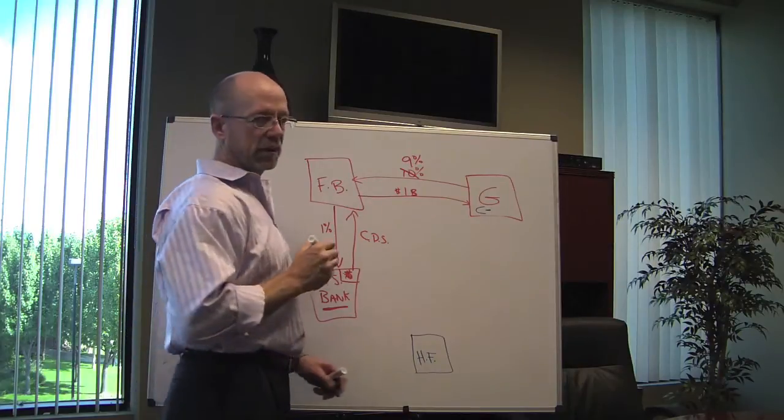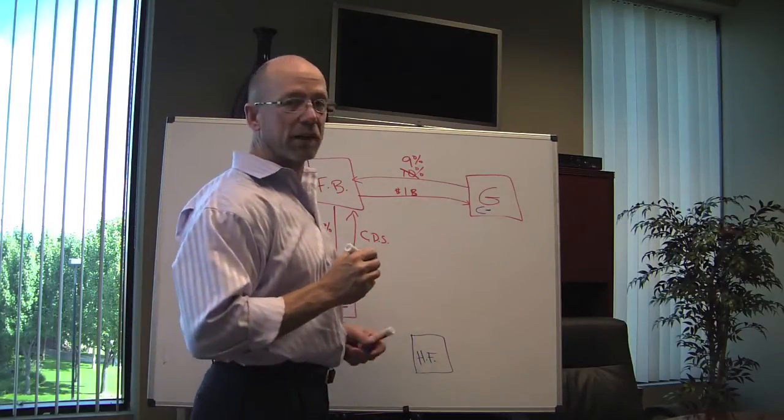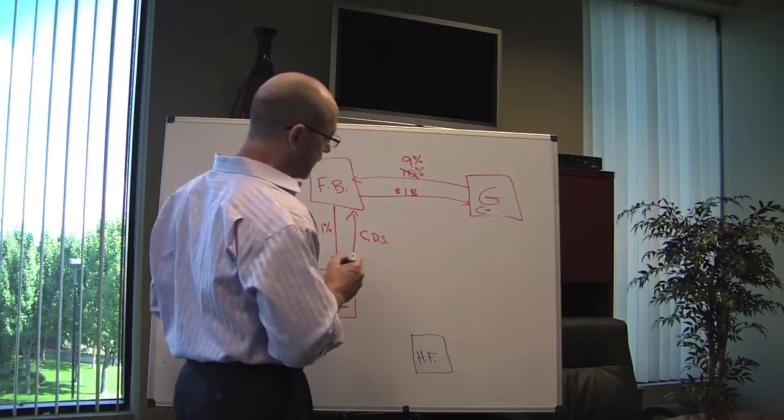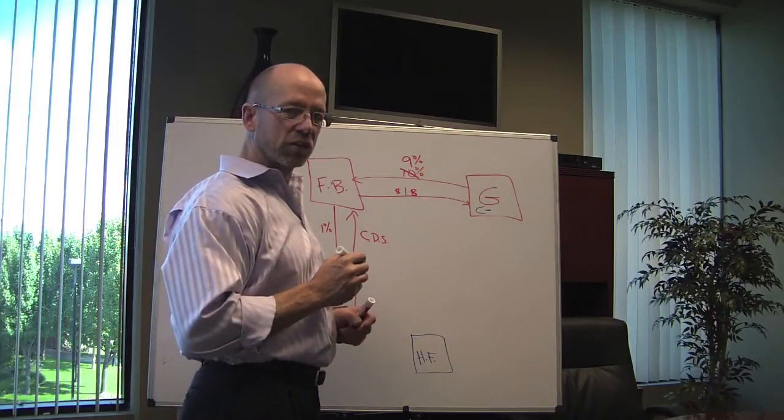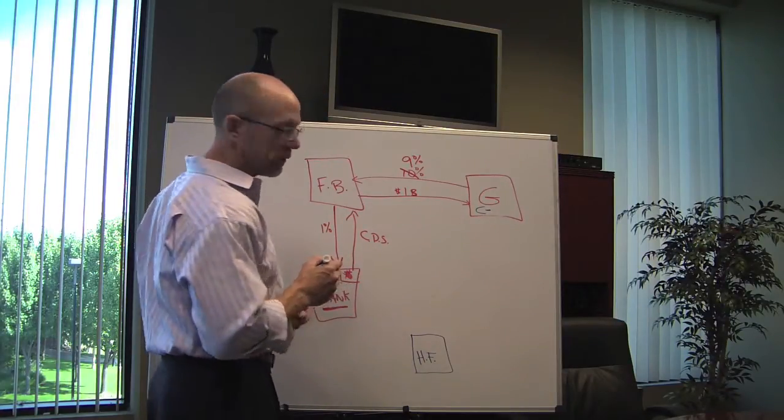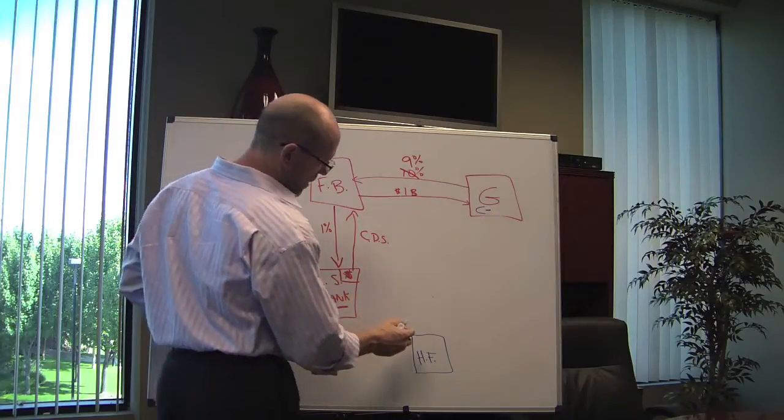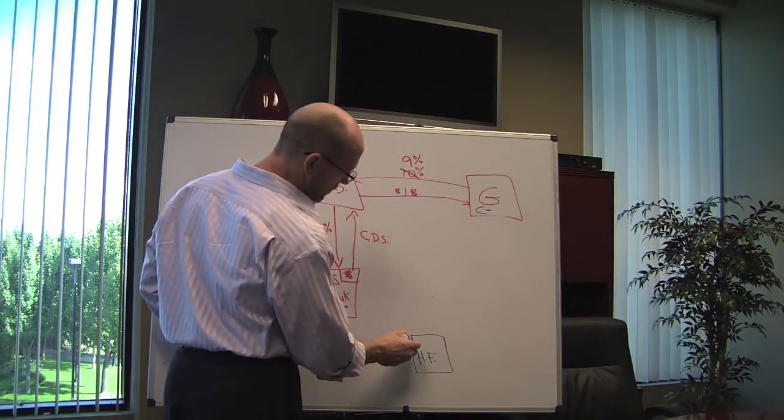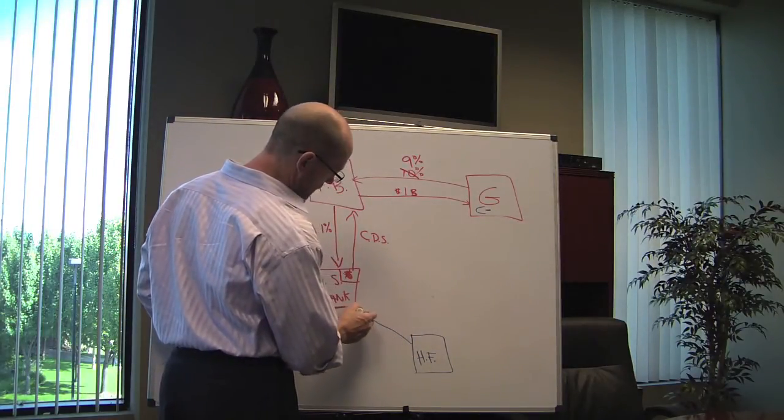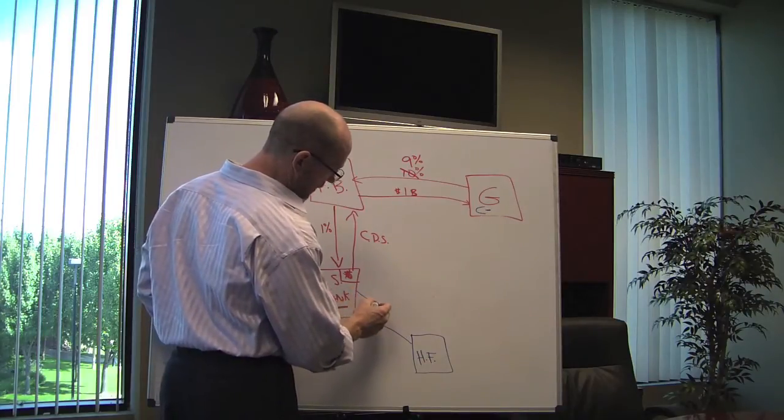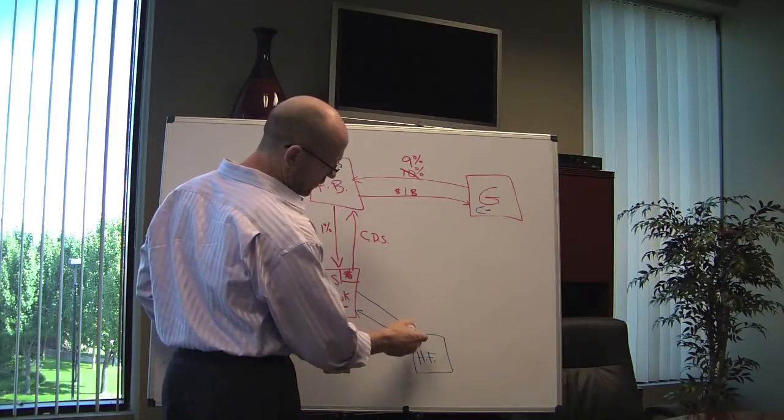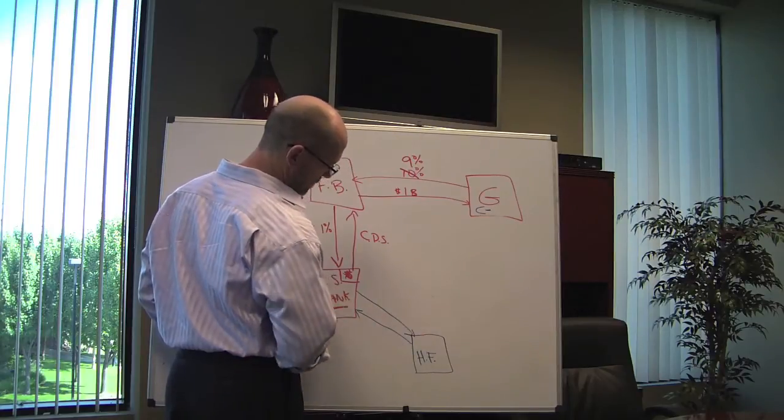So they would like to capitalize on that. Obviously they're not going to lend money to Greece or invest money in Greece, but they sure would like to have a piece of that insurance if there's any way to do that. And in fact there is. They can actually buy, believe it or not, a credit default swap on Greece's debt, because US Bank, at the time of this illustration, is still issuing them.